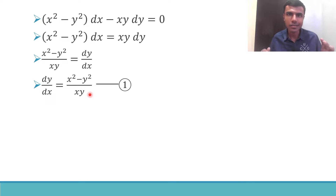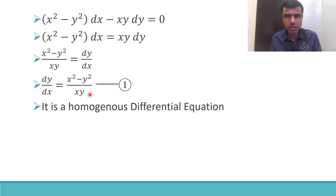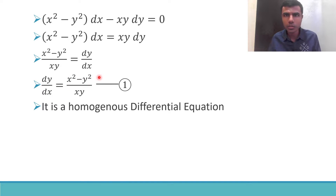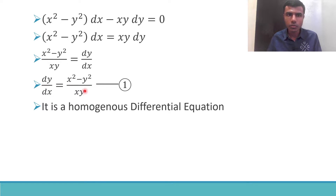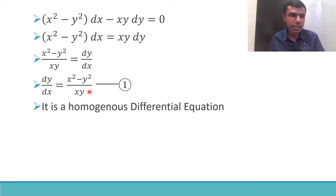If you observe, this is a homogeneous differential equation. What does this mean? Basically, the numerator is a homogeneous function of degree two and the denominator is also a homogeneous function of degree two. So both numerator and denominator are homogeneous functions and their degree is two.